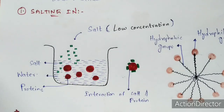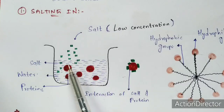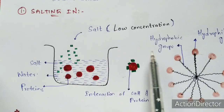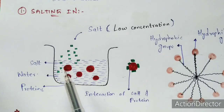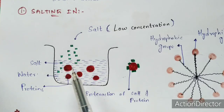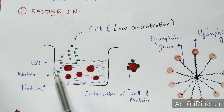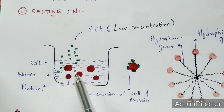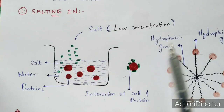By the salting in process, pure form of proteins are not obtained. Because the salt has been attached to the protein, if you extract the proteins after removing the total water, the salt will also come out along with the proteins. So pure form of proteins is not obtained in the salting in process, because the interaction of salt and protein has occurred.